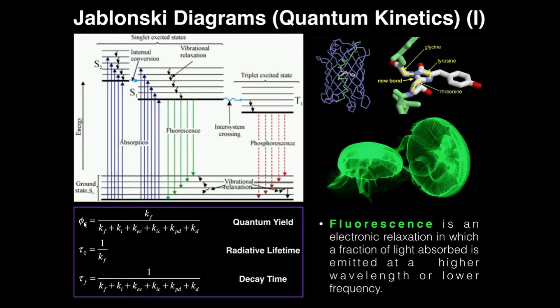So if I wanted to talk about the rate constant with respect to internal conversion, I would just replace this kf with kic. That's the only difference. But normally we talk about the rate constant for fluorescence, and therefore the quantum yield of fluorescence.